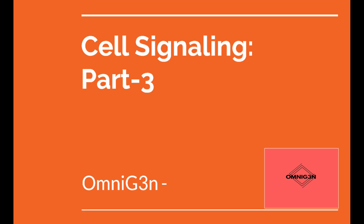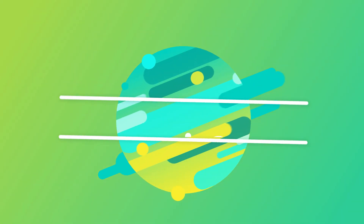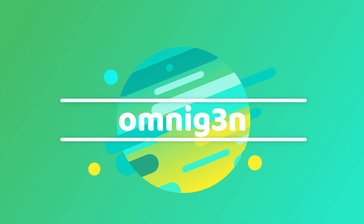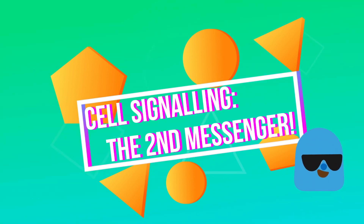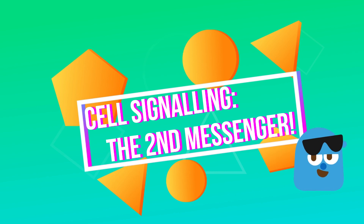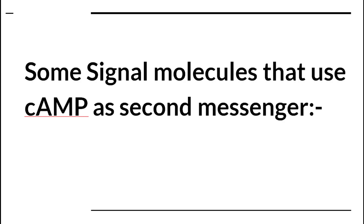Hello! Today we will be learning a little more about cell signalling. This is cell signalling part 3. We will be learning about a very important factor in cell signalling, that is the second messenger of cell signalling. As I had promised, I would be naming a few second messenger cell signalling molecules that use cAMP.